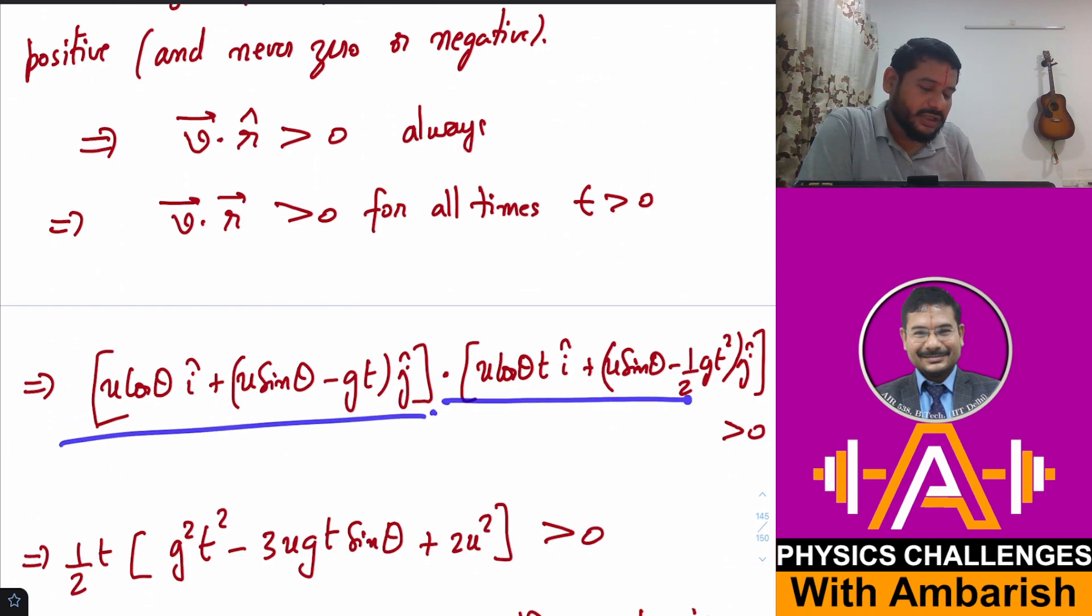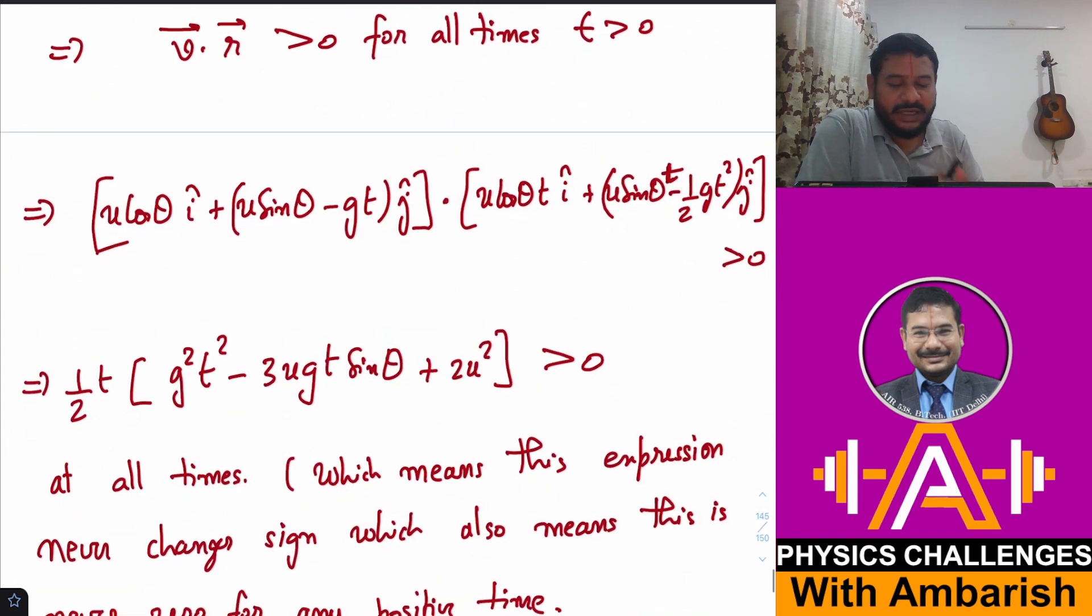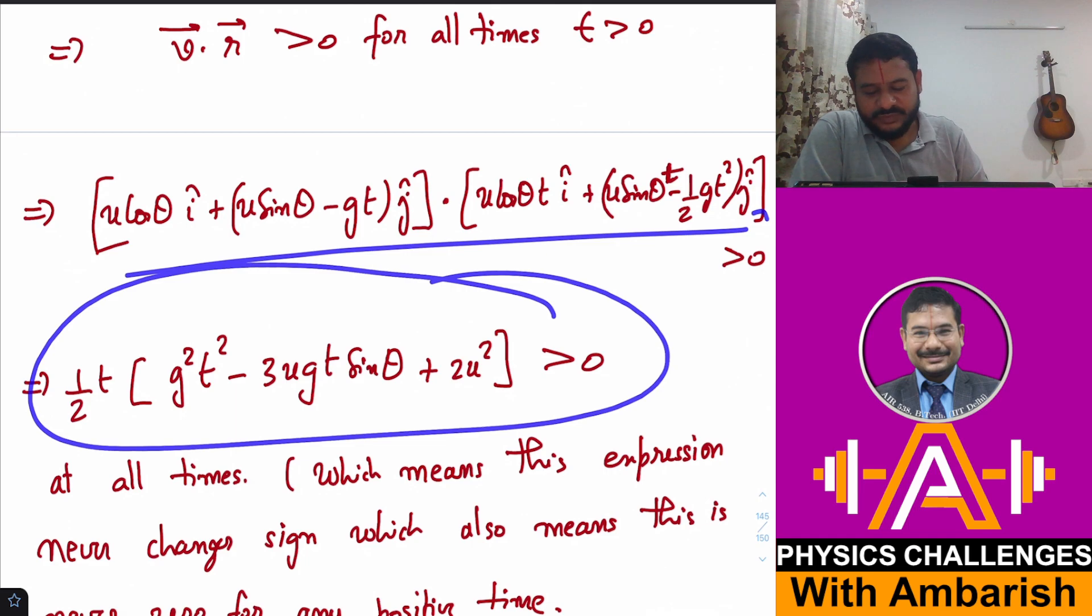And what about the position vector? x-coordinate is u cos θ t, and y-coordinate is u sin θ t - ½gt². If you take the dot product, î multiplied by î, ĵ multiplied by ĵ, and expand the whole thing and simplify, this comes out to ½t(g²t² - 3ugt sin θ + 2u²) > 0 for all times t > 0.